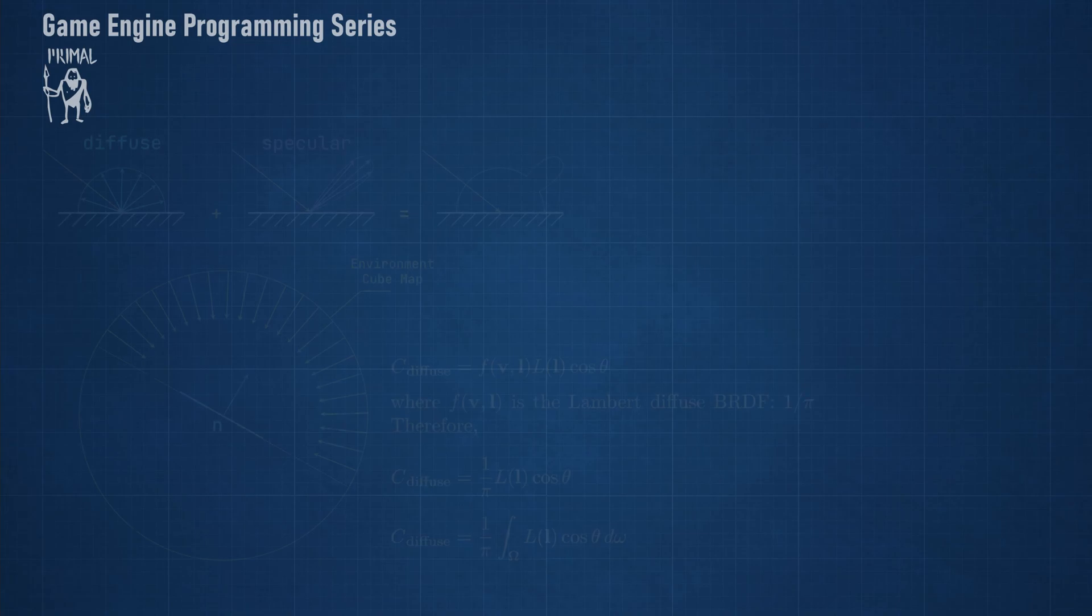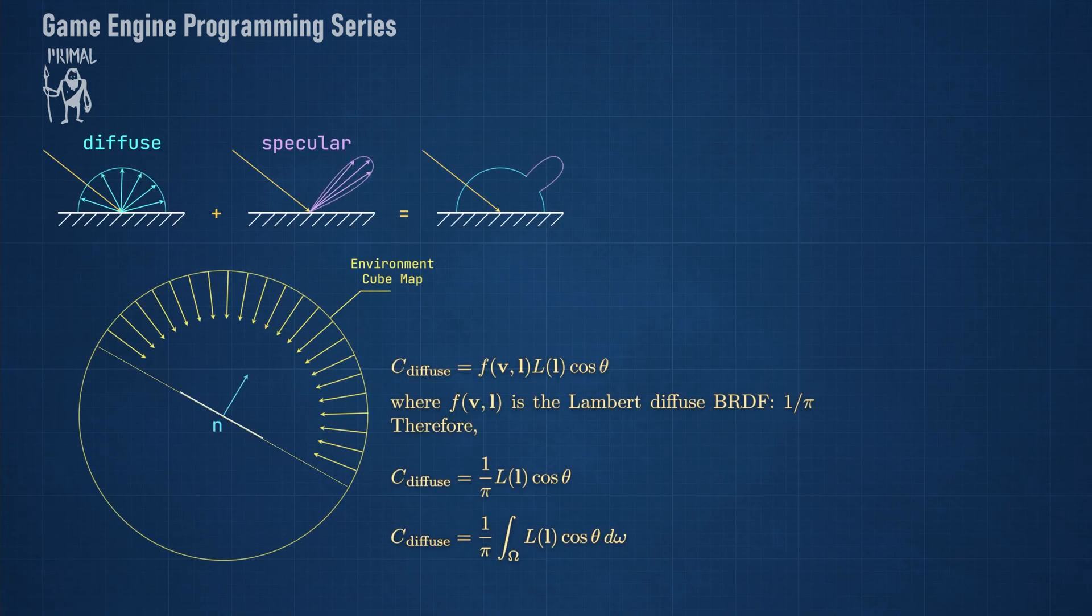In that video, we looked at the diffuse component of pre-filtering and we discussed three different methods that numerically evaluate this integral, which calculates the total light contribution of the hemisphere using Lambert's diffuse BRDF.